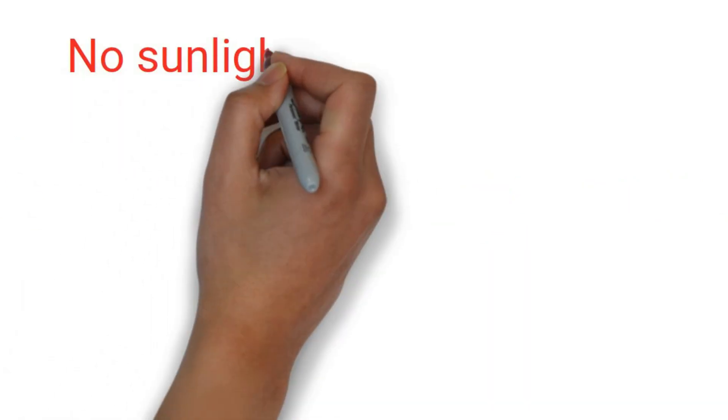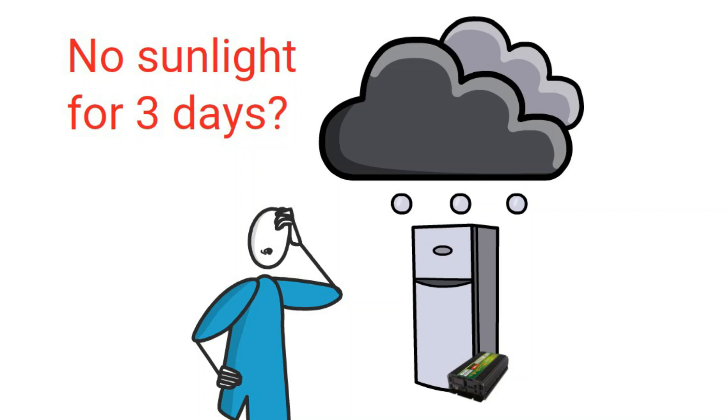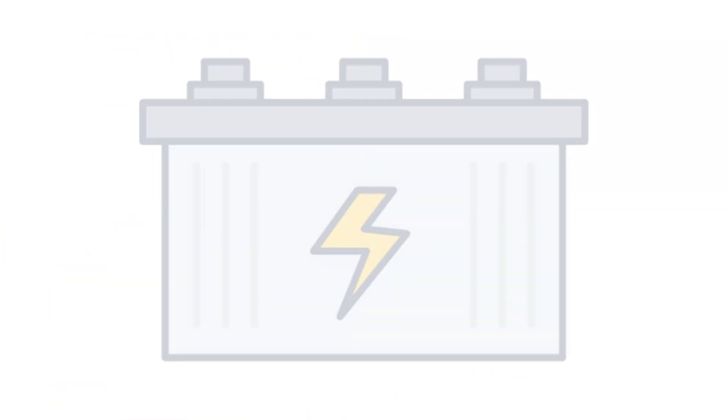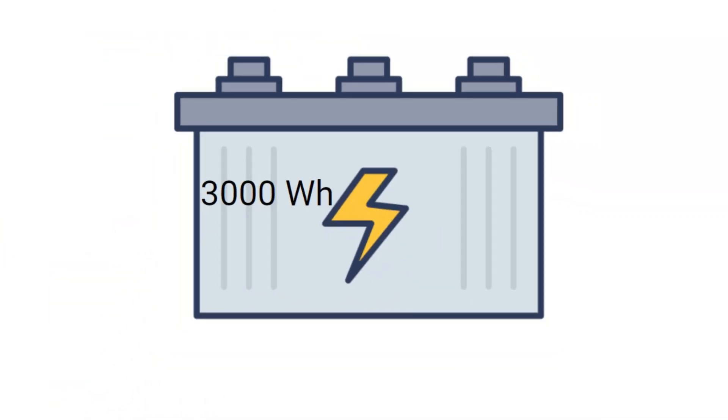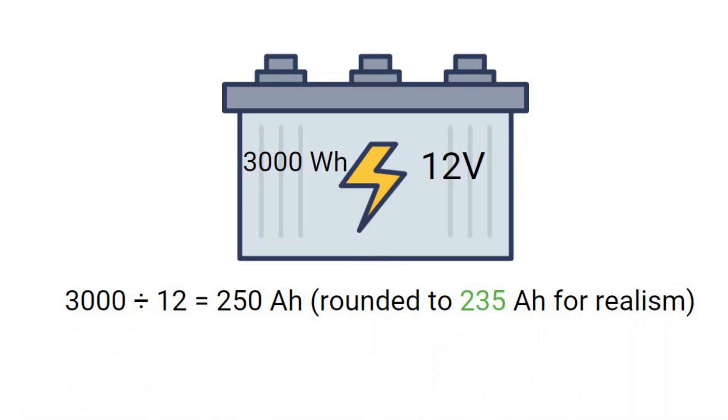But what if you want backup power for three days, in case there's no sunlight? Well, in that case, you'll need a battery with 3,000 watt-hours of storage capacity. If you're using a 12-volt battery system, that equals around 235 amp-hours.